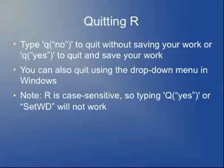To quit R, there are a couple of ways. If you're using Windows or Mac, there's a quit option under the file menu. Another way is from the R command prompt: you can type q() with either 'no' or 'yes' in the parentheses, depending on whether or not you want to save your work. You can define variables in R — usually these will be data you've stored. If you want to save that data, quit and save your work; otherwise say no. Most of the time I recommend saving your work unless you just did some quick thing you don't need to remember.